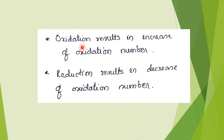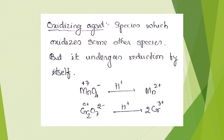Oxidation and reduction can also be defined in terms of oxidation number. An increase in oxidation number is oxidation, and a decrease in oxidation number is reduction. We should also know what exactly an oxidizing agent and a reducing agent are.